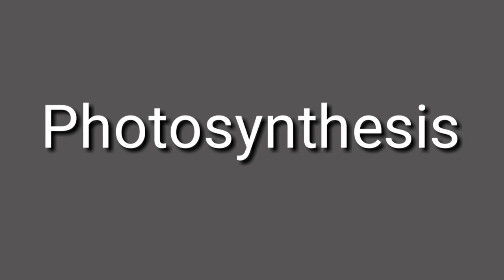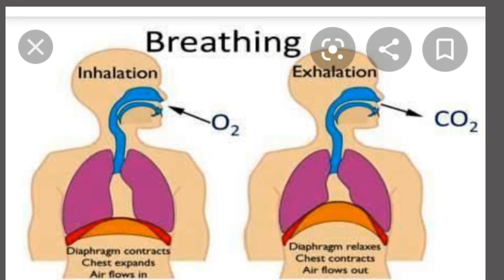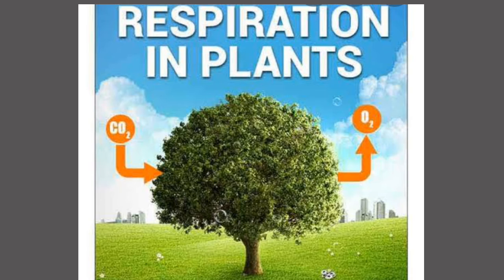The next characteristic is respiration. Respiration means the process of inhaling and exhaling. During respiration, we breathe in oxygen from the air and give out carbon dioxide. In plants, exchange of gases takes place through the leaves — plants receive carbon dioxide and in return release oxygen.